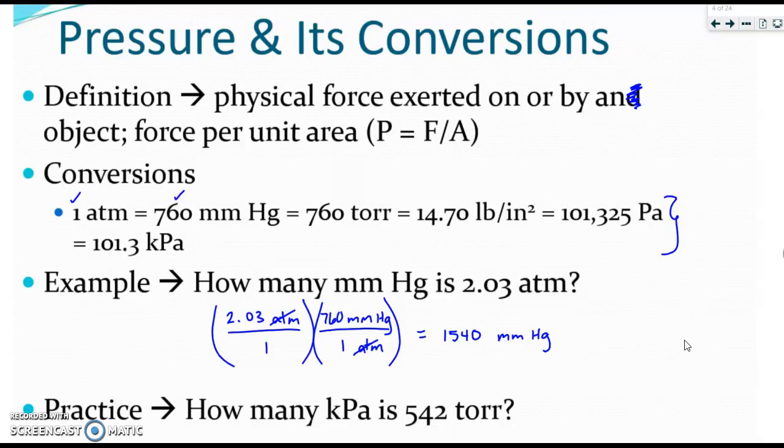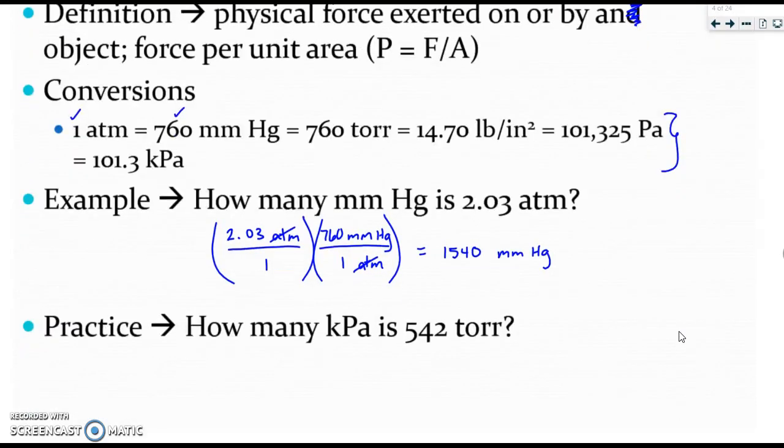Please pause the video and try the provided practice problem. Please check your answer. You should have gotten 72.2 kPa. All of those conversion factors are equal to each other. They're all equalities that can be turned into any fraction needed. So we were able to just compare torr to the kPa. Torr cancels out because of the diagonal drop. And you're going to multiply and divide.